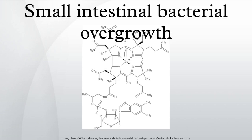Small intestinal bacterial overgrowth, also termed bacterial overgrowth or small bowel bacterial overgrowth syndrome, is a disorder of excessive bacterial growth in the small intestine. Unlike the colon, which is rich with bacteria, the small bowel usually has fewer than 10⁴ organisms per milliliter.